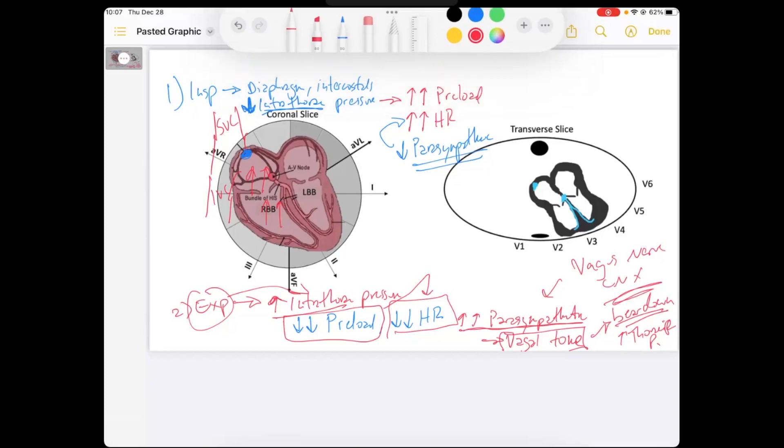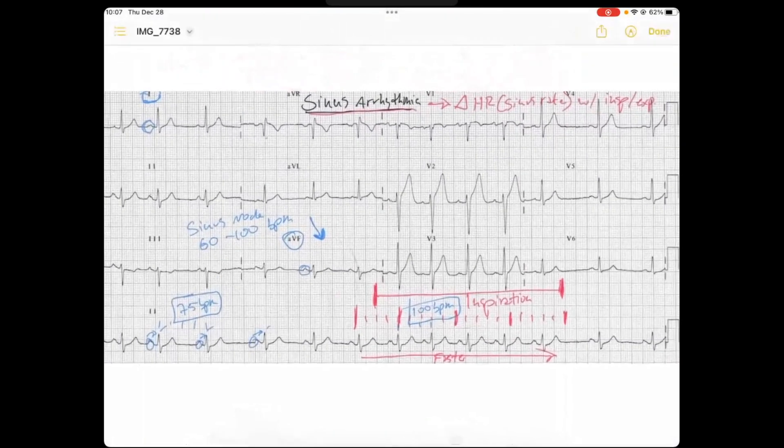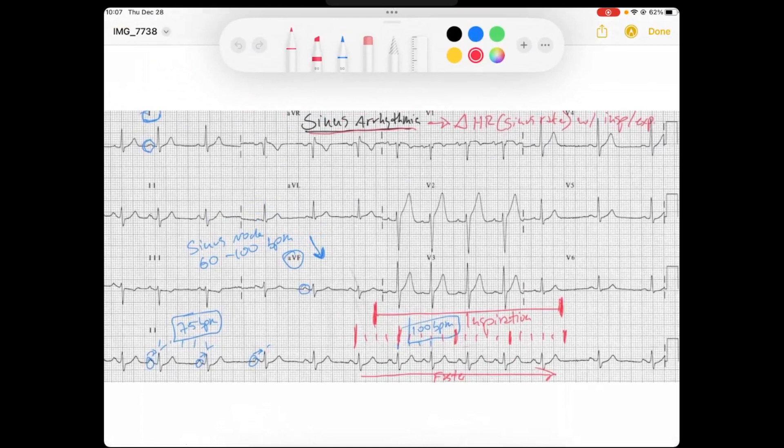So when you look at the EKG when this is producing the expiratory phase of our sinus arrhythmia, you can see here at our 75 beats per minute section. This is our expiratory phase. And you can see beforehand the transition from the fast to slow, this is our inspiration, we expire, get slower.